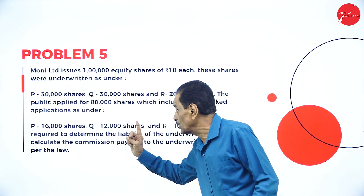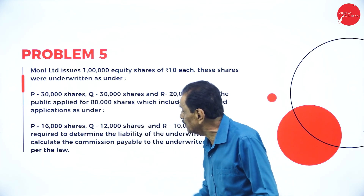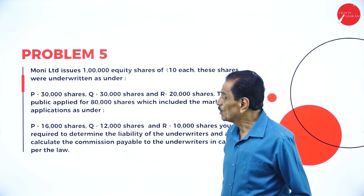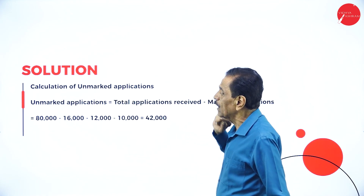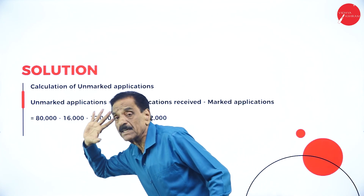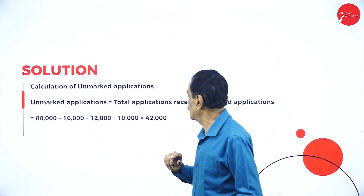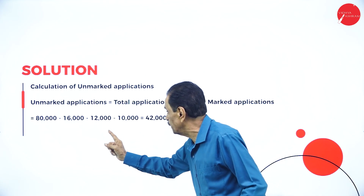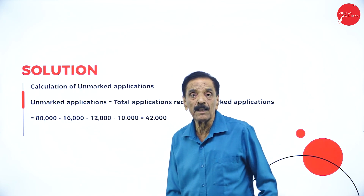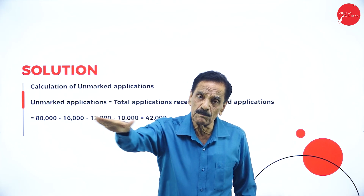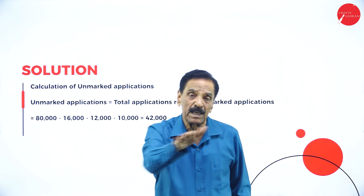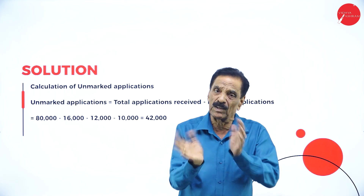The company issued 1 lakh shares and applications received total 80,000. Out of that, marked applications are 16,000 plus 12,000 plus 10,000 equals 38,000. Now calculation of unmarked application: total application received 80,000 minus marked application 38,000 equals 42,000 unmarked applications. Total application minus marked application equals unmarked application — either way you can calculate it.